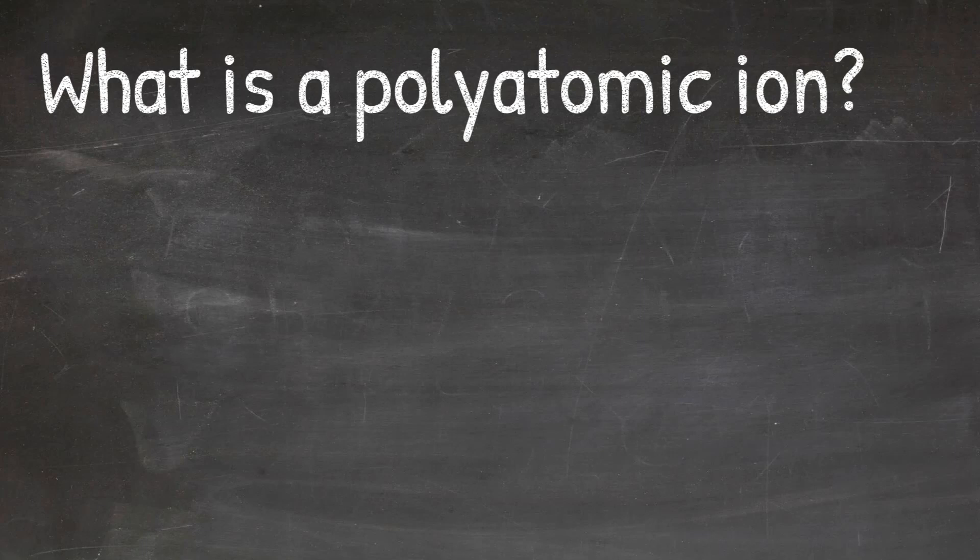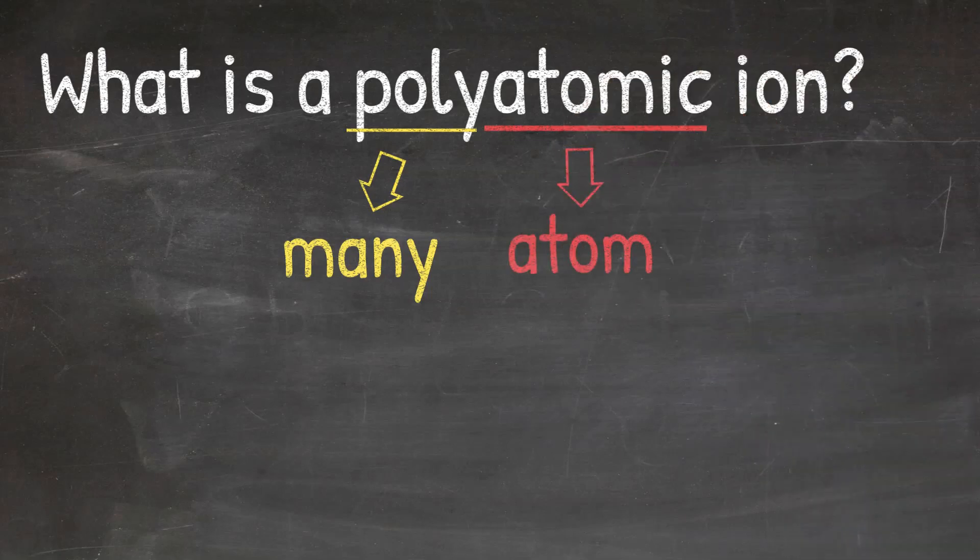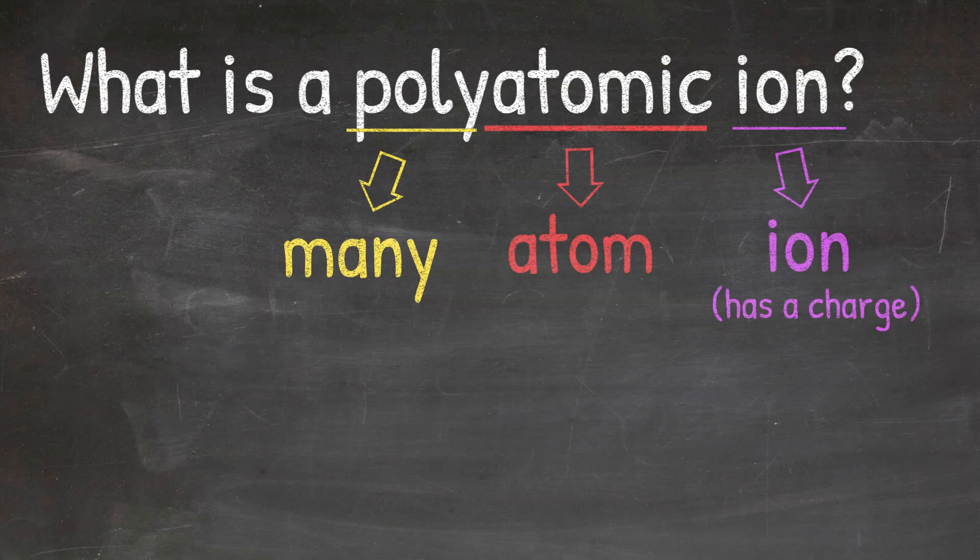A polyatomic ion is an ion that is made up of multiple elements. We can break down the word polyatomic to help us understand. Poly means many, atomic means atom, and ion means ion, which means it will have a charge. So a polyatomic ion just means a many atom ion or an ion that is made up of many or multiple atoms.